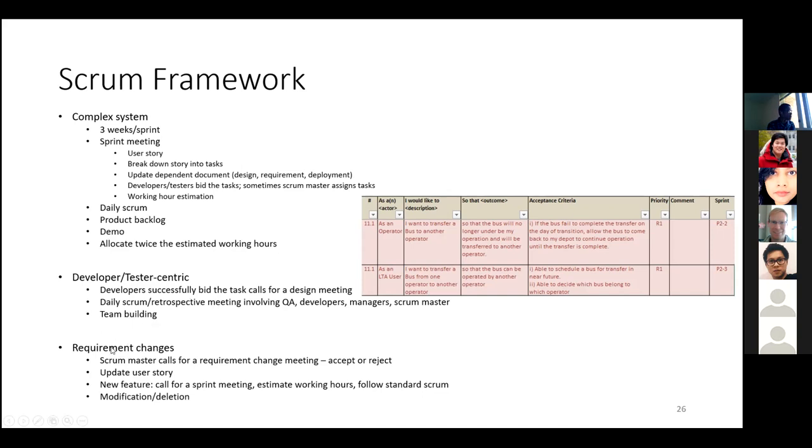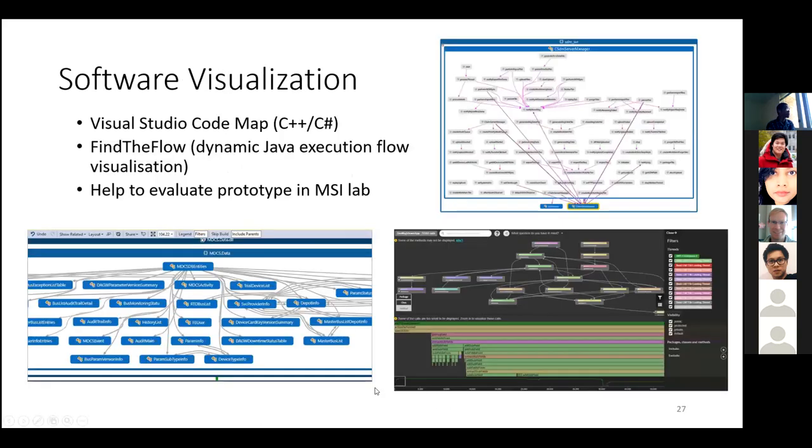We also face some requirement changes from the customers. So sometimes the scrum master calls for a requirement change meeting, whether we accept or reject the requirement, the functional changes. Usually, we will follow our SOP to update the user story to include new features or modification of existing features. We call for a sprint meeting to involve developers and software designers to estimate the impact of the changes, because we don't want to impact the existing working system in production. And we also want to balance the new requirement.